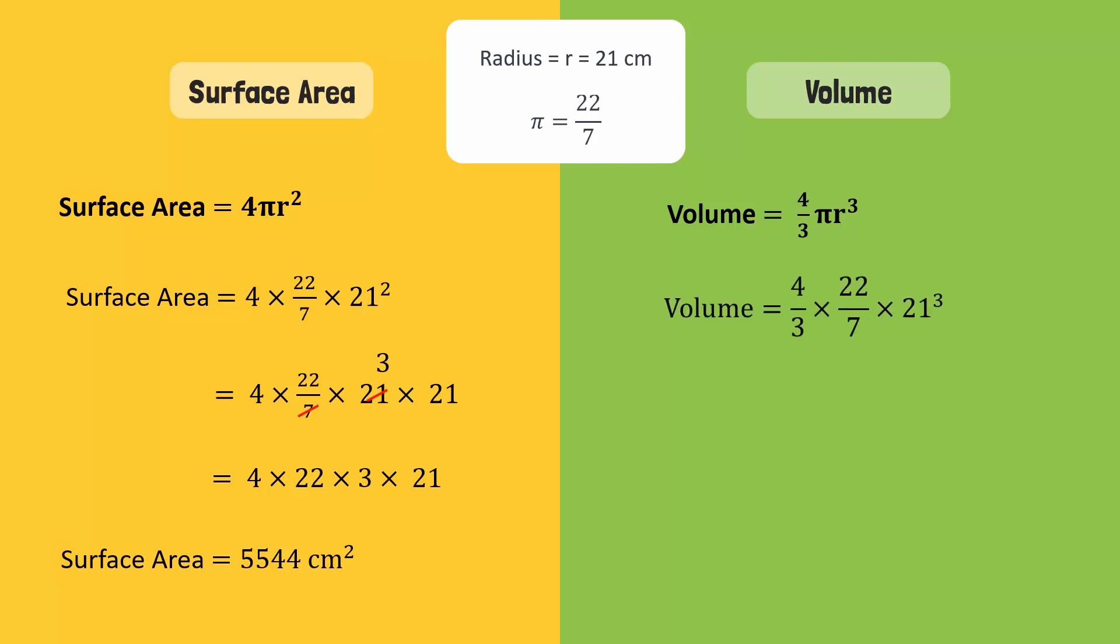Substituting the values of r and pi in the formula, we get volume is equal to 4 divided by 3 times 22 divided by 7 times 21 cubed. 21 cubed can be written like this and can then be cancelled by 7 and also by 3.